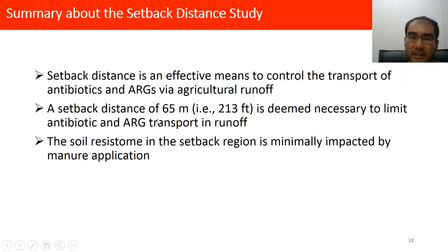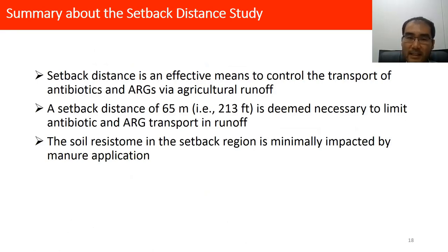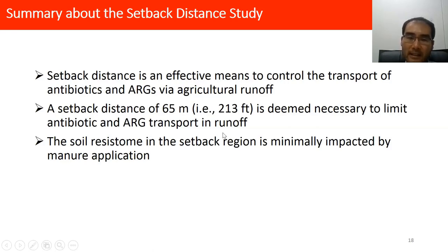In summary, setback distance is an effective means to control the transport of antibiotics and ARGs in agricultural runoff. Considering both antibiotics and ARGs under the environmental conditions tested, a setback distance of 65 meters or 213 feet is deemed necessary to limit their transport in runoff. Additionally, the setback region soil is minimally impacted by manure application in the manure region of the plot.